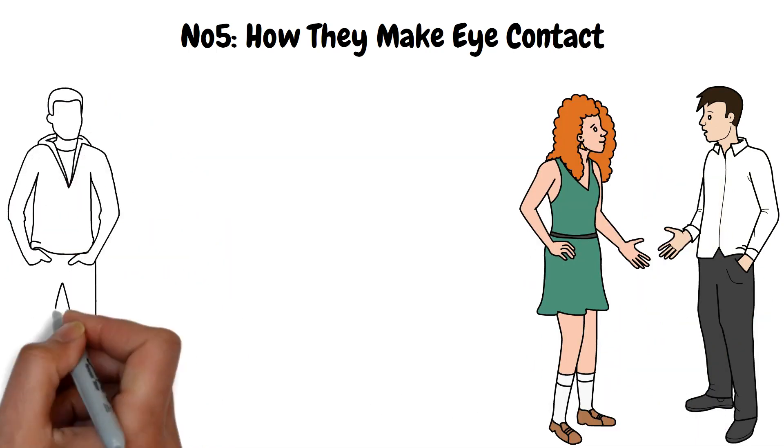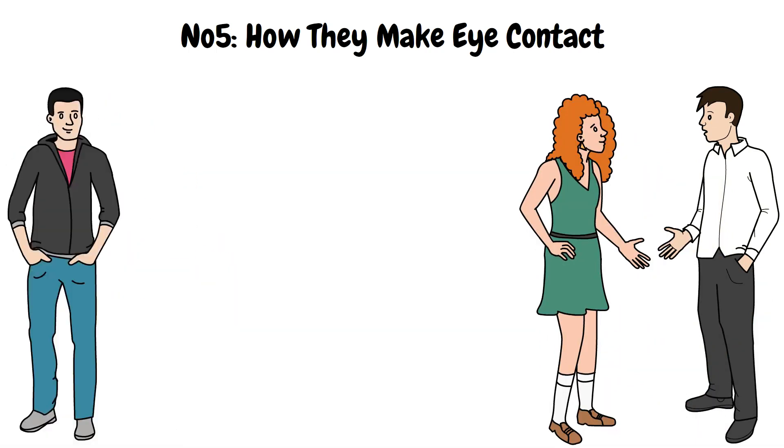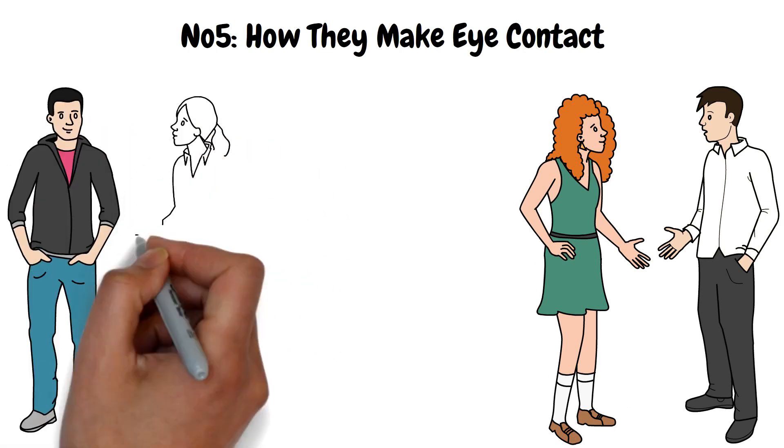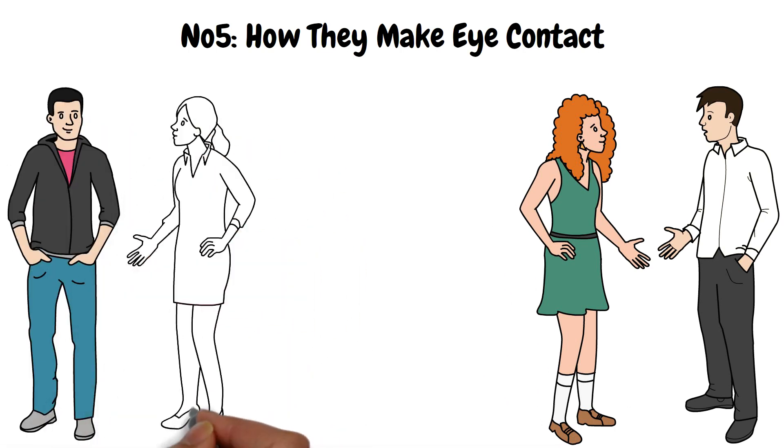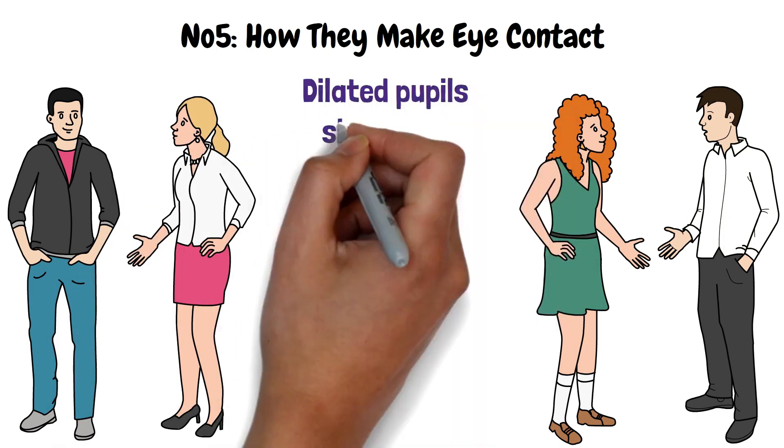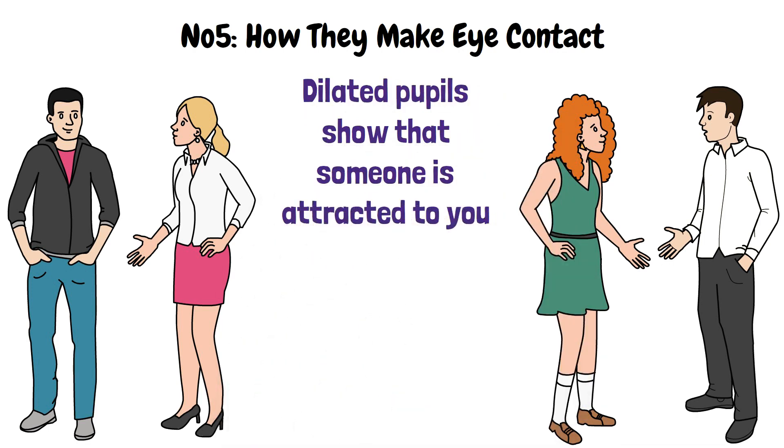Eyes that wander around throughout the conversation can mean that the person finds you boring, but it can also mean that you are talking to someone who is introverted or nervous about something. Shy people also have trouble looking someone in the eye for a longer period of time. Dilated pupils show that someone is attracted to you. Squinting eyes convey suspicion or enmity.